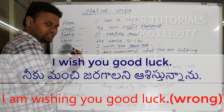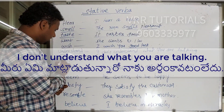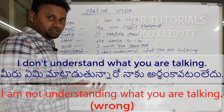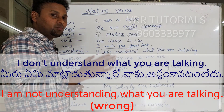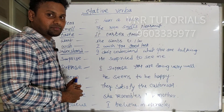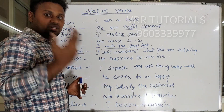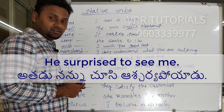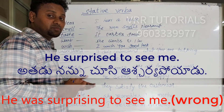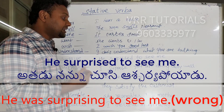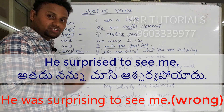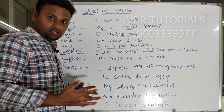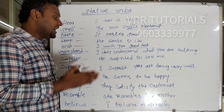Next: 'understand.' I don't understand what you are talking — that is correct. Don't say 'I am not understanding what you are talking' — that is incorrect. Next: 'surprise.' He surprised to see me — correct in past. Don't say 'he is surprising to see me.' It doesn't go with continuous. Next: 'suppose.' I suppose you are doing very well. Saying 'I am supposing you are doing very well' is incorrect.